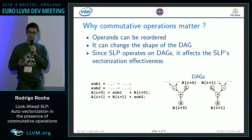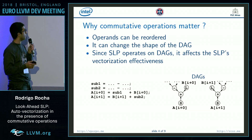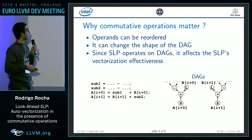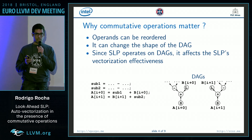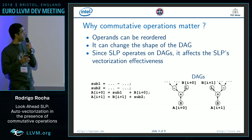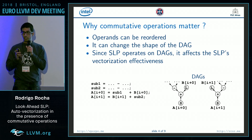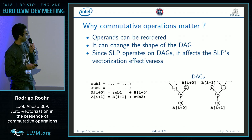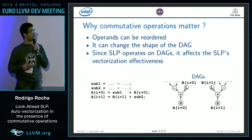So why do commutative operations matter? If you have commutativity, it means that you can reorder the operands of binary operators. By reordering the operands, you change the shape of the DAGs. And because SLP works on these DAGs, changing the shape of these DAGs will affect how SLP can effectively vectorize a piece of code.